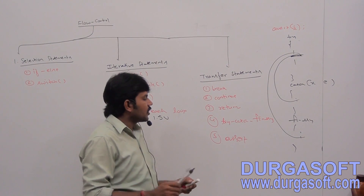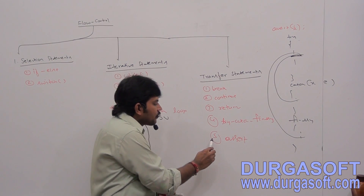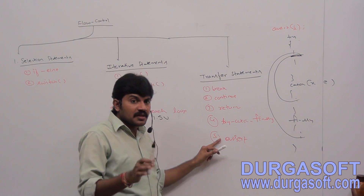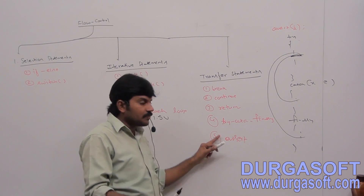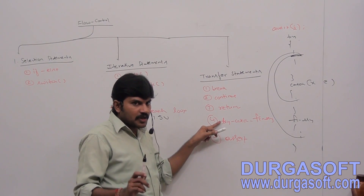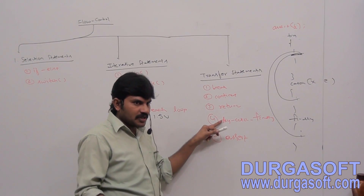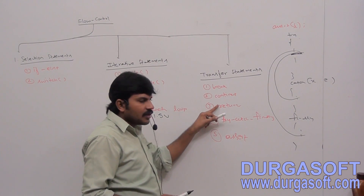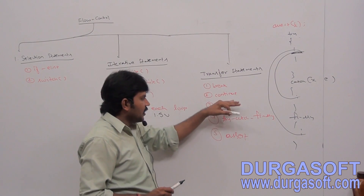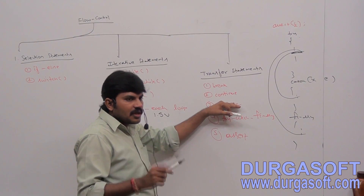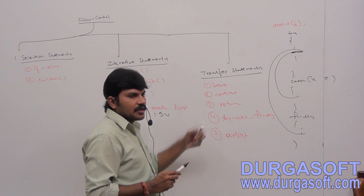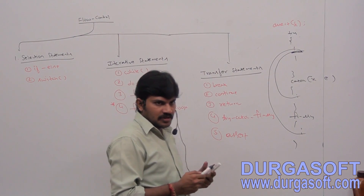So in summary, all flow control statements are of three types. In this class, up to break and continue will be explained. Try-catch-finally will be covered in the exception handling concept. Return will also be covered there. Assert statement will be explained in the assertions concept.